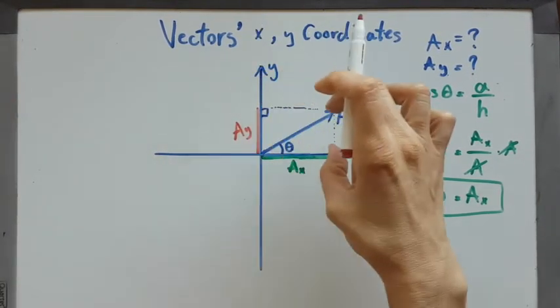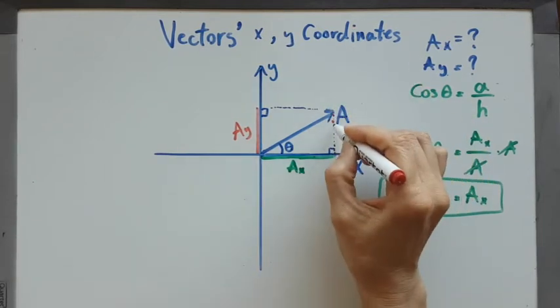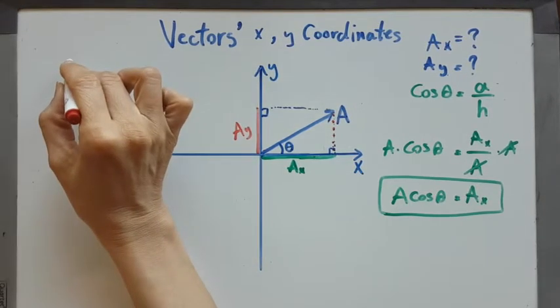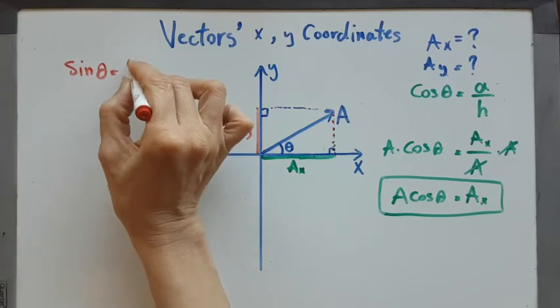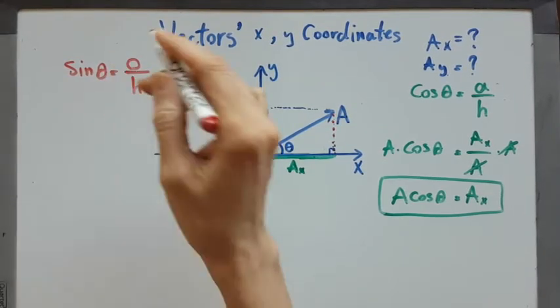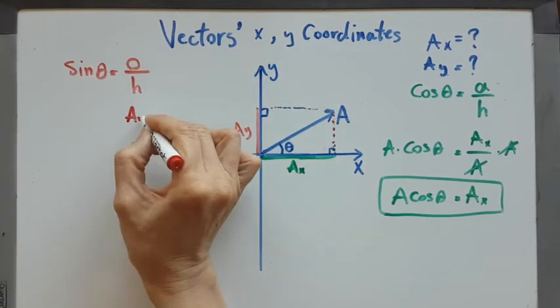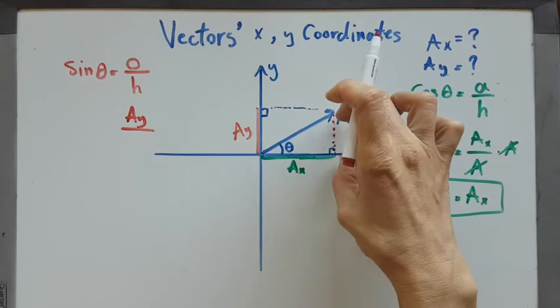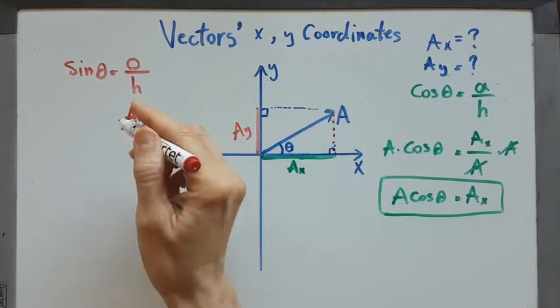I can see this is equal to the opposite. Sine of theta equals opposite over hypotenuse. The opposite is ay and the hypotenuse is a.